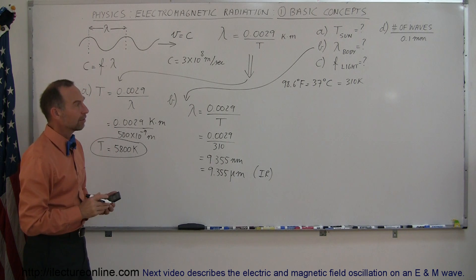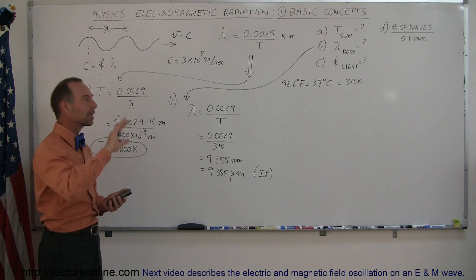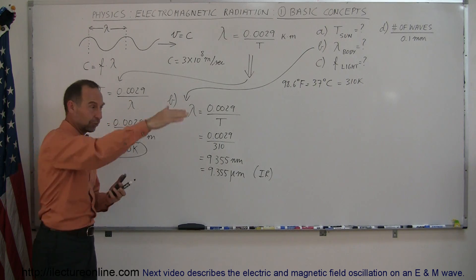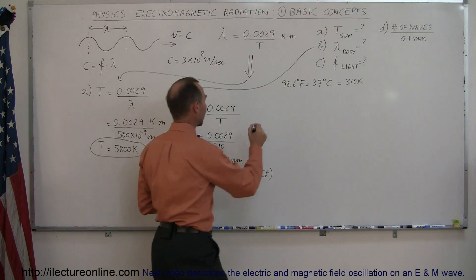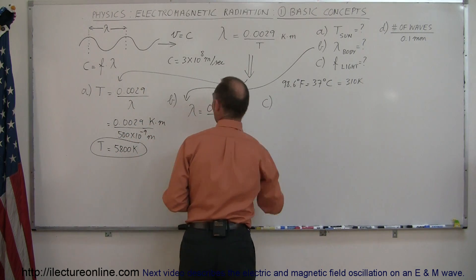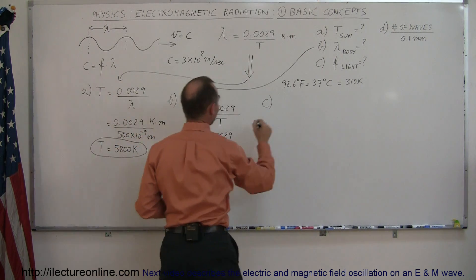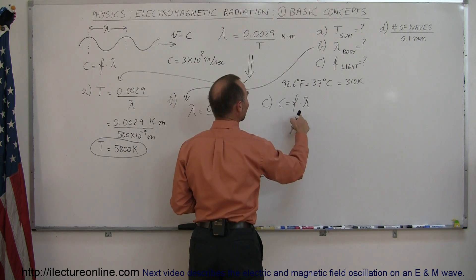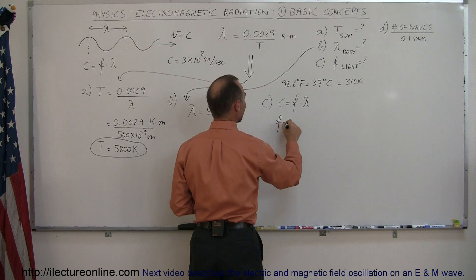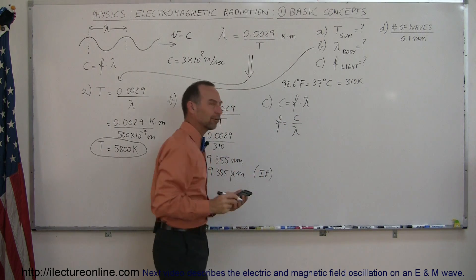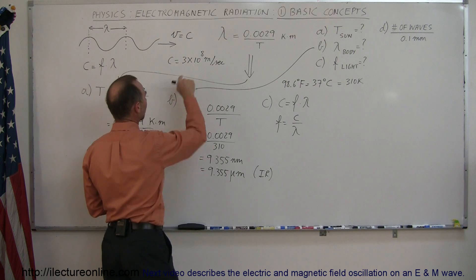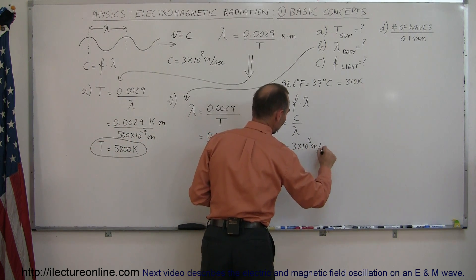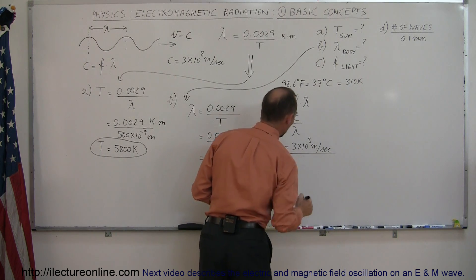For Part C, the frequency of light: how many oscillations per second does light make as it travels through space at 186,000 miles per second? Using our equation — speed of light equals frequency times wavelength — we can solve for frequency: frequency equals speed of light divided by wavelength. The speed of light is 3 times 10 to the 8 meters per second, and we divide that by the wavelength of visible yellow light, 500 times 10 to the minus 9 meters.